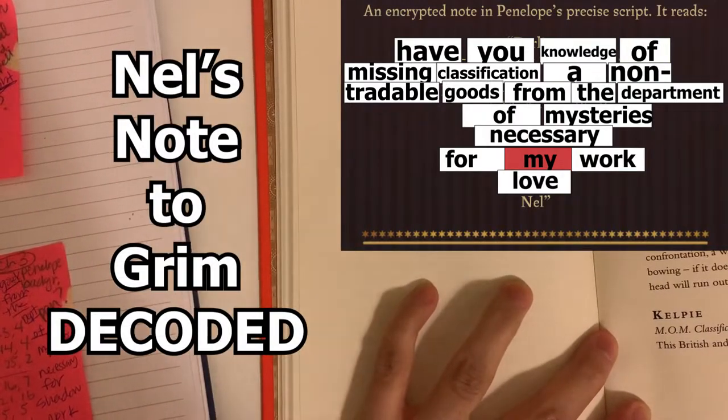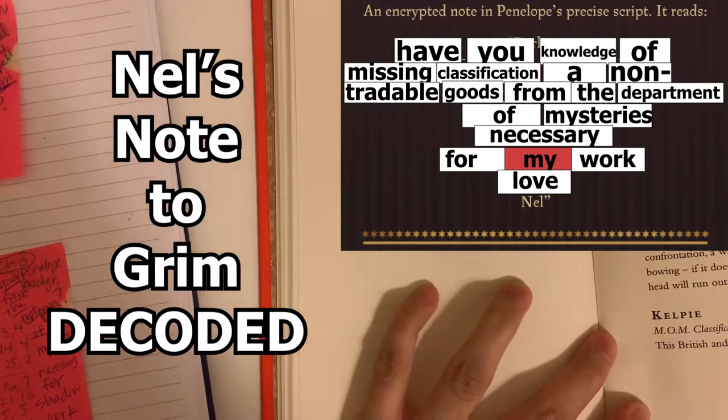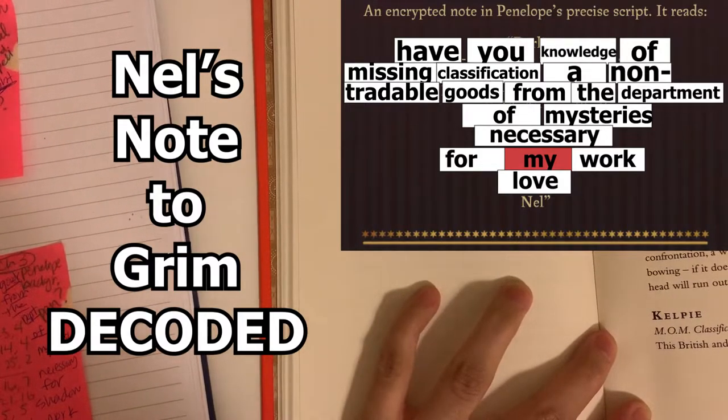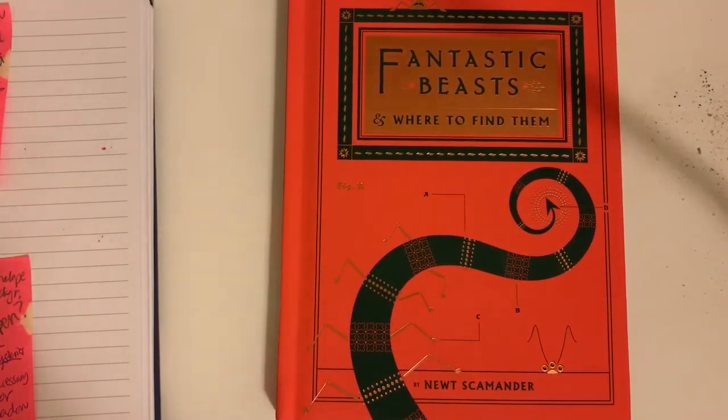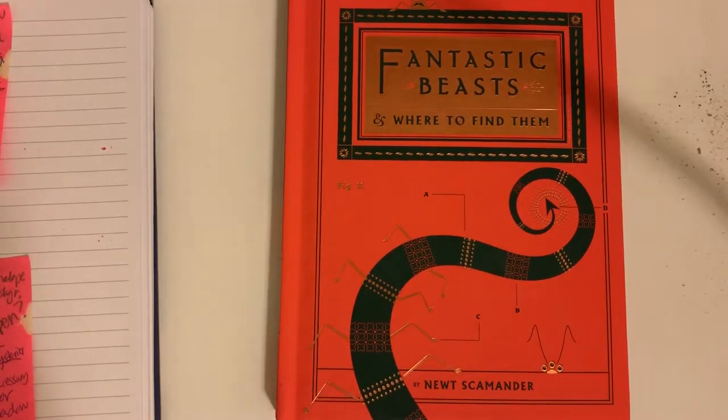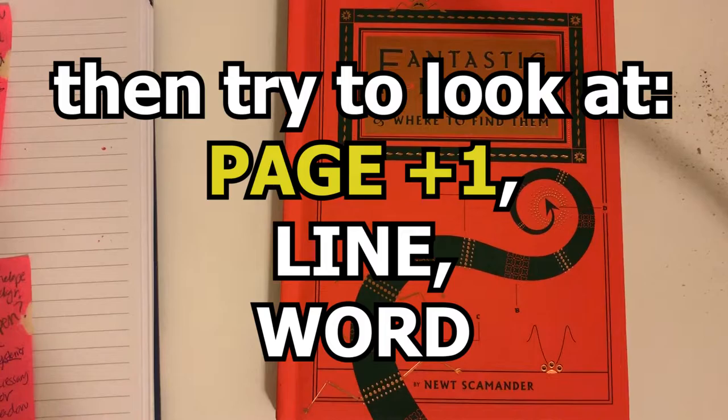So the full message is, have you knowledge of missing classification, a non-tradable good from the department of mysteries necessary for shadow work. If there's something that doesn't make sense, skip it and then come back to it.